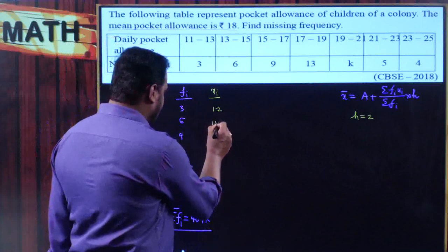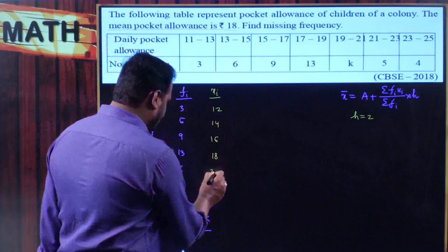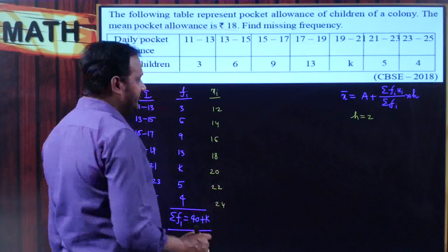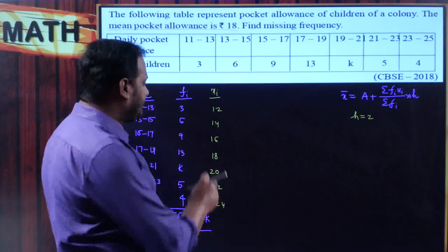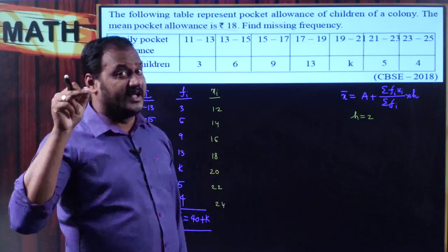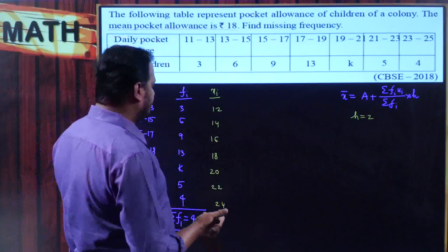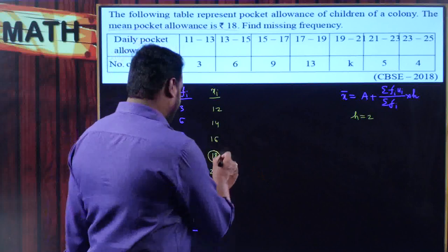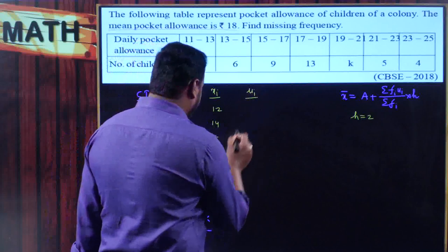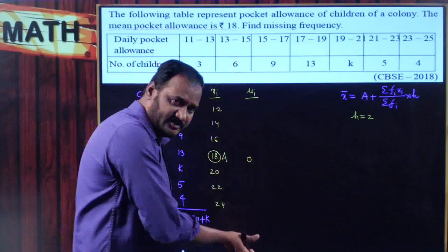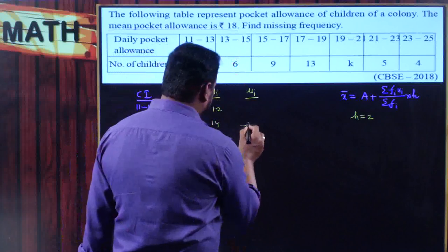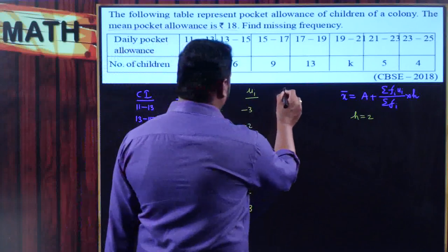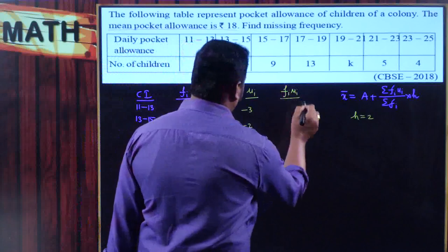So the mid-values are 12, 14, 16, 18, 20, 22, 24. Next I choose one mid-value as the assumed mean A. I take A = 18. The ui value corresponding to A is 0; values above are negative and below are positive. So ui values are −3, −2, −1, 0, 1, 2, 3.